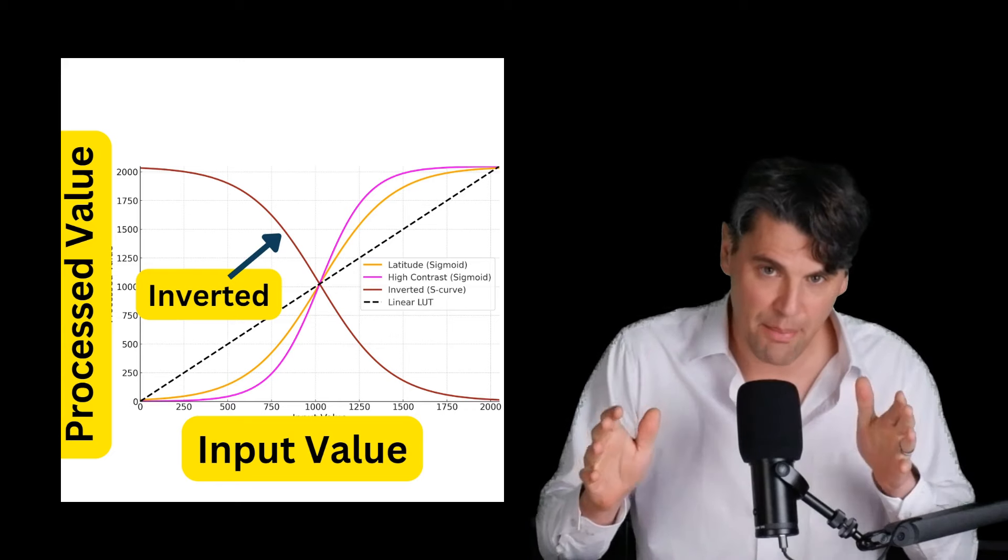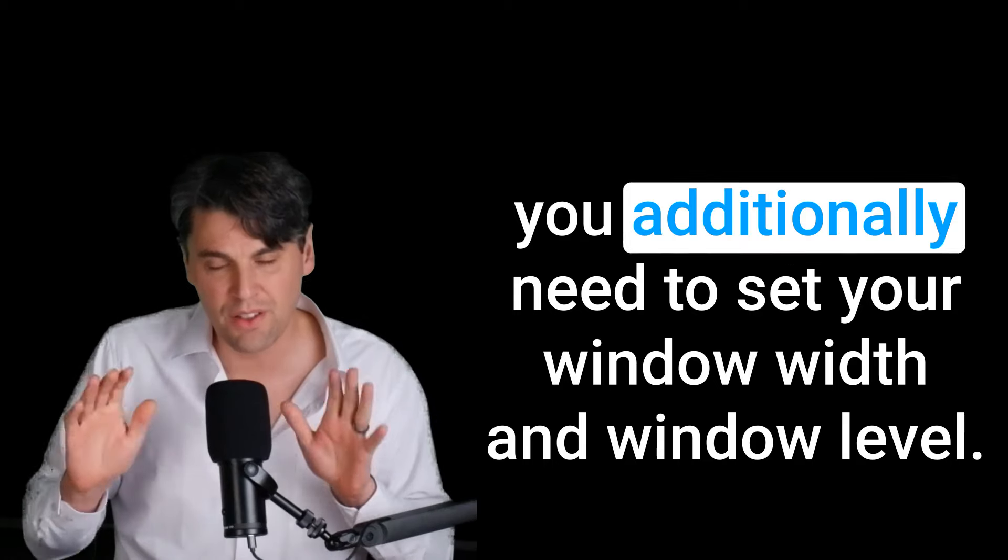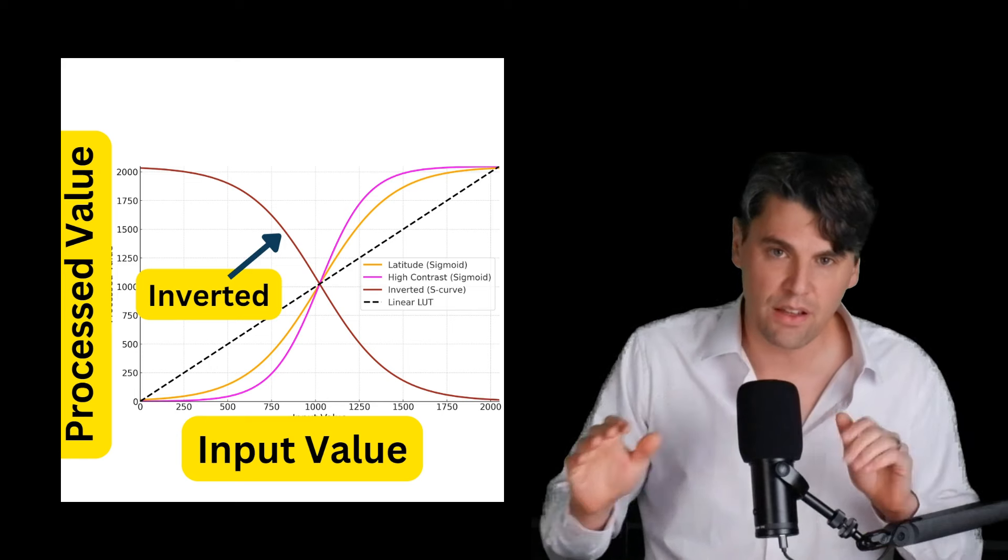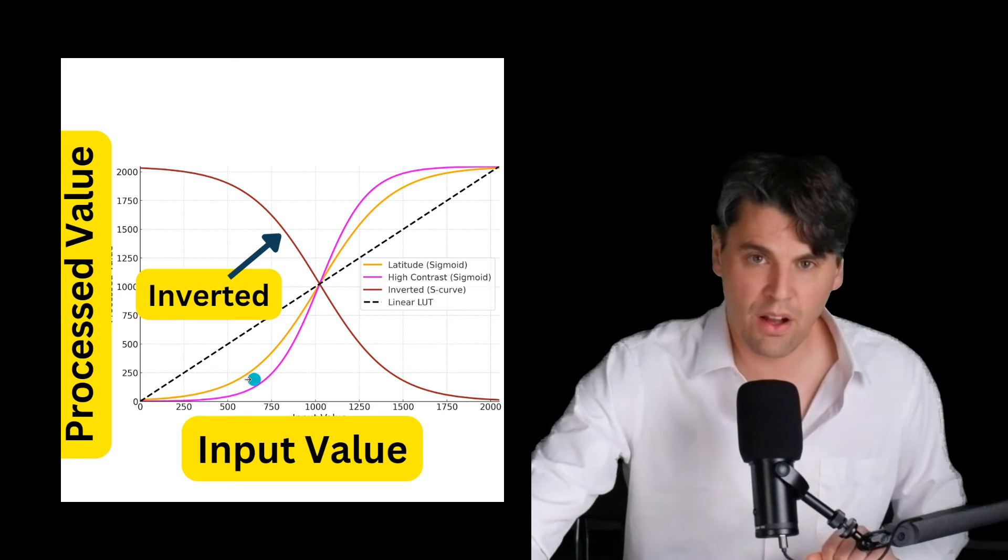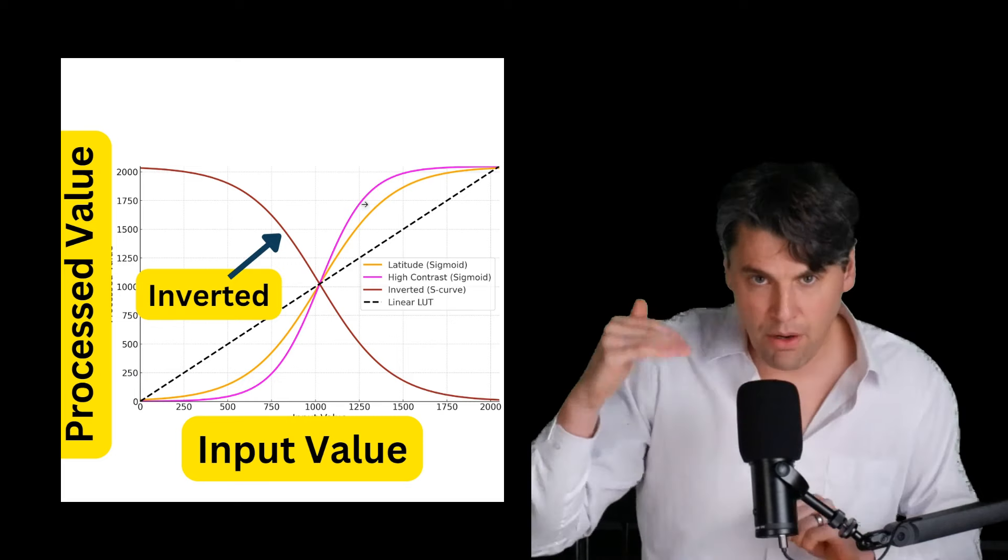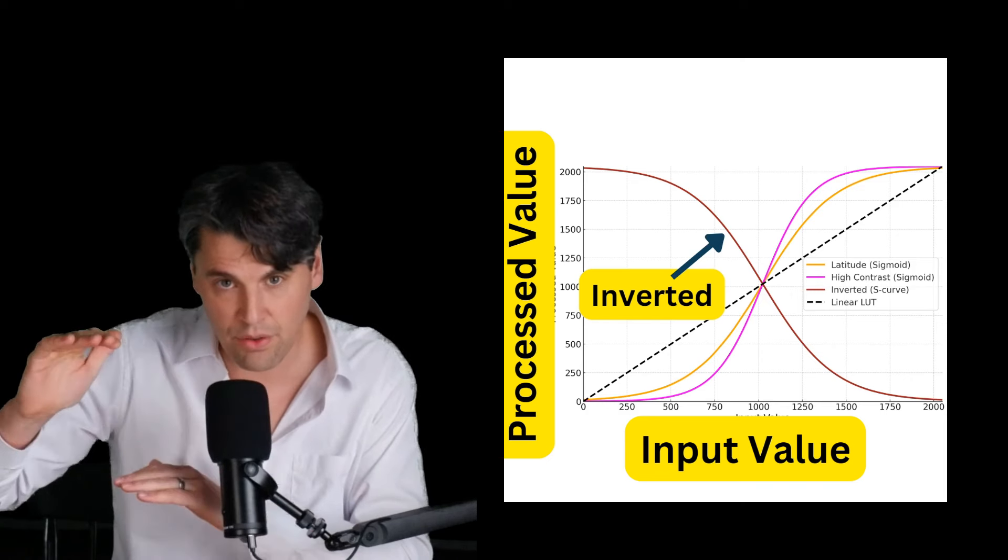This is the processing that happens within a lookup table. To actually display the image, you additionally need to set your window width and window level. And that actually controls the range of values from a minimum value to a maximum value that are going to be shown. And the middle value is the window level. And then the total range that you're going to show is the window width. For more details to really understand window width and window level, definitely check out our video on window width and window level coming up next.